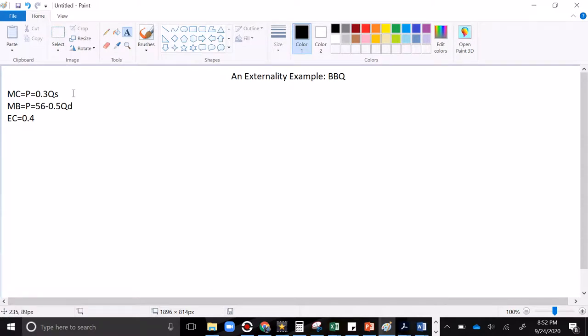So it's an externality question. There's this scenario of this barbecuer who happens to also be trained as an economist, who knows that his marginal cost curve is 0.3Q and his inverse demand curve, marginal benefits, is 56 minus 0.5Q. And he also knows from talking to his neighbors that when he smokes the meat, for every pound he smokes, it has 40 cents of cost to his neighbors.